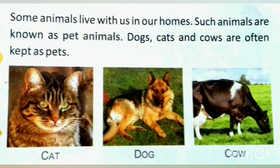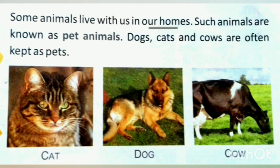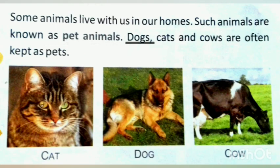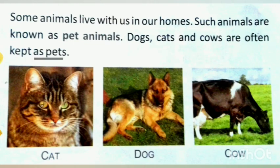Page number 31. Some animals live with us in our homes. Such animals are known as pet animals. Dogs, cats and cows are often kept as pets. Here we have three pictures: cat, dog, cow. These are pet animals. We will learn about pet and wild animals in detail in our next video.